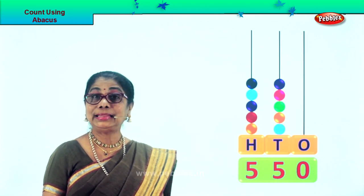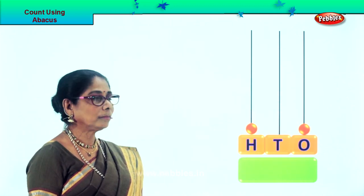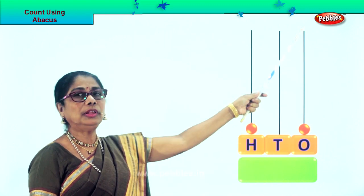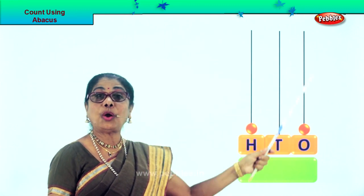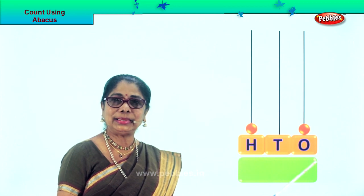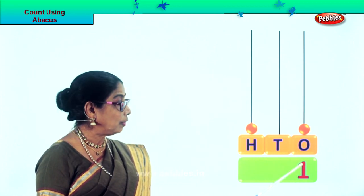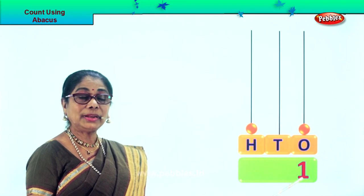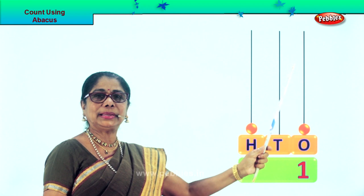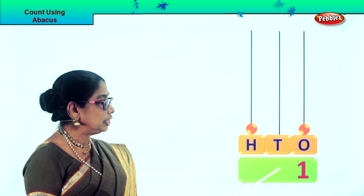Let's look at another sum. Now look at the 1s place. On the rod we have 1 single beat in the 1s place, so we put down number 1. Now we come to the 10s place — on the abacus there are no beats, so we put 0 here.